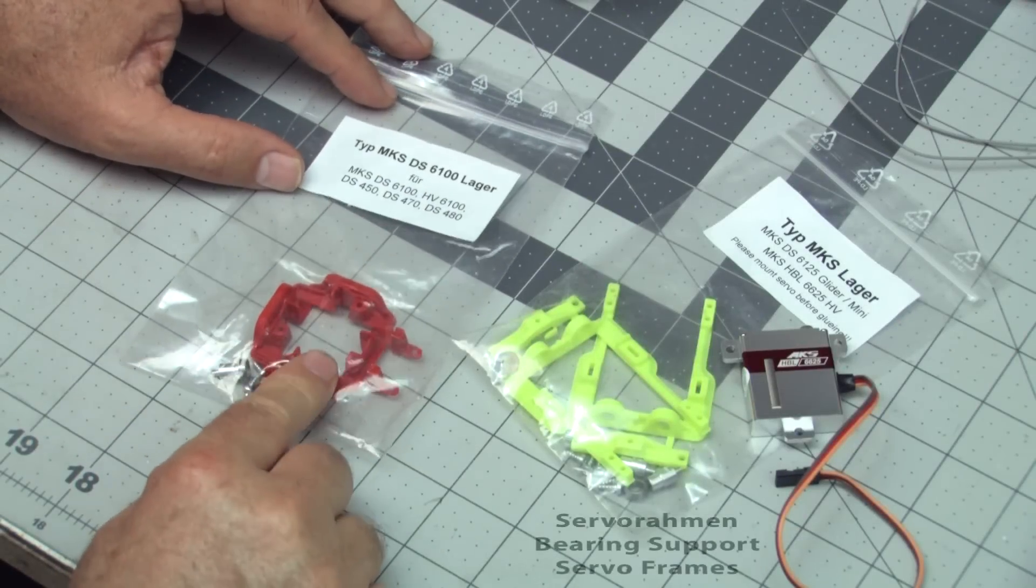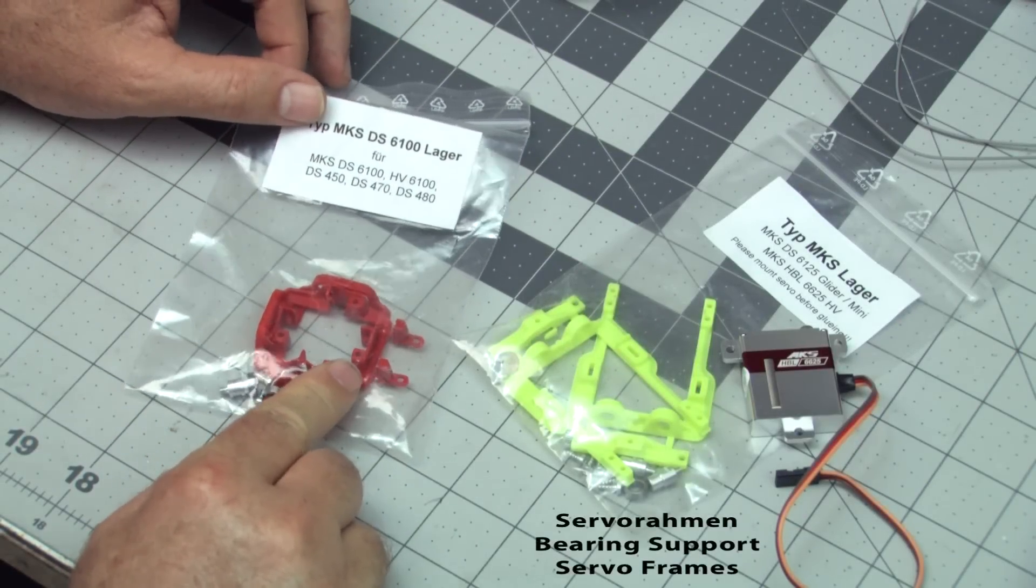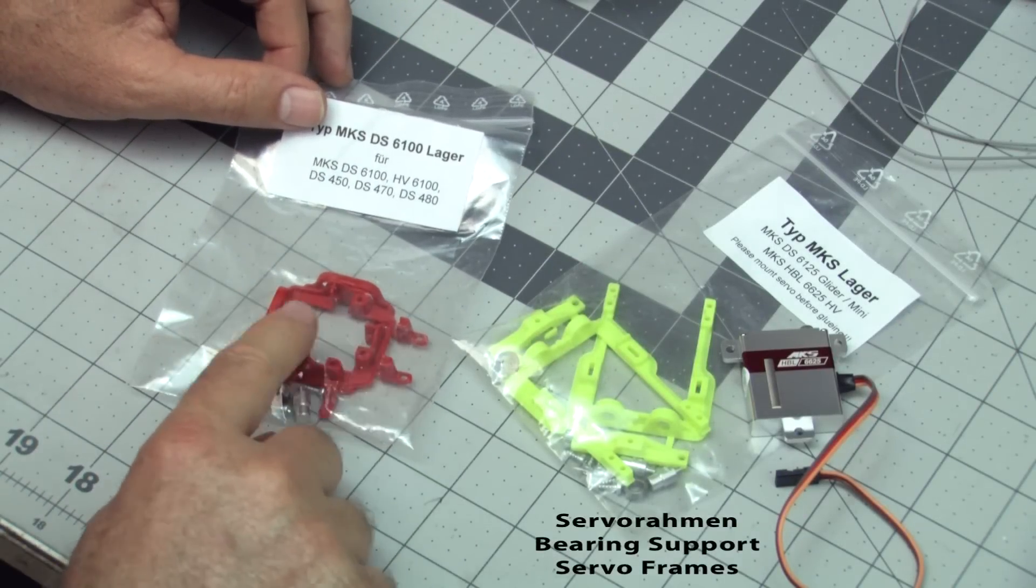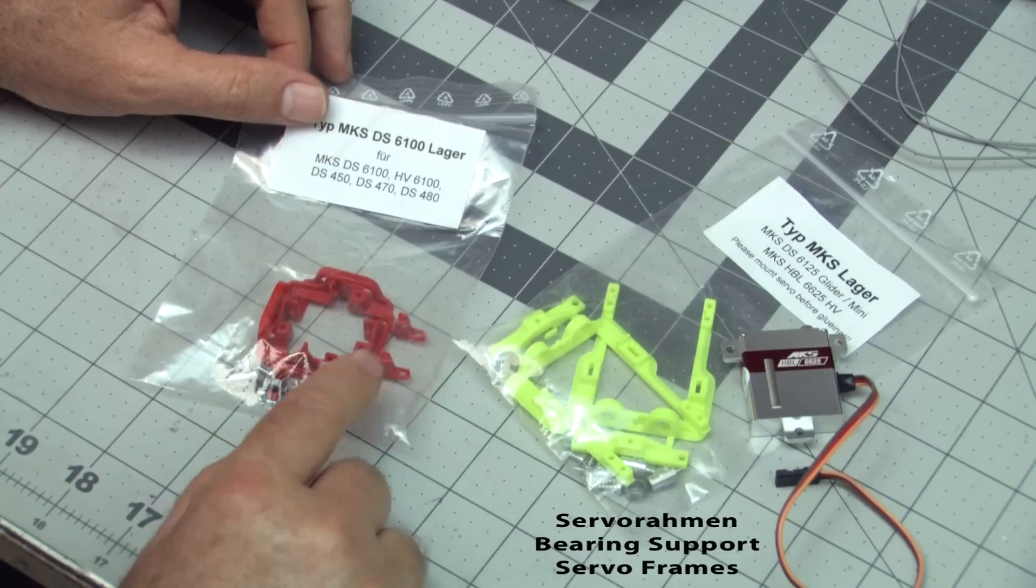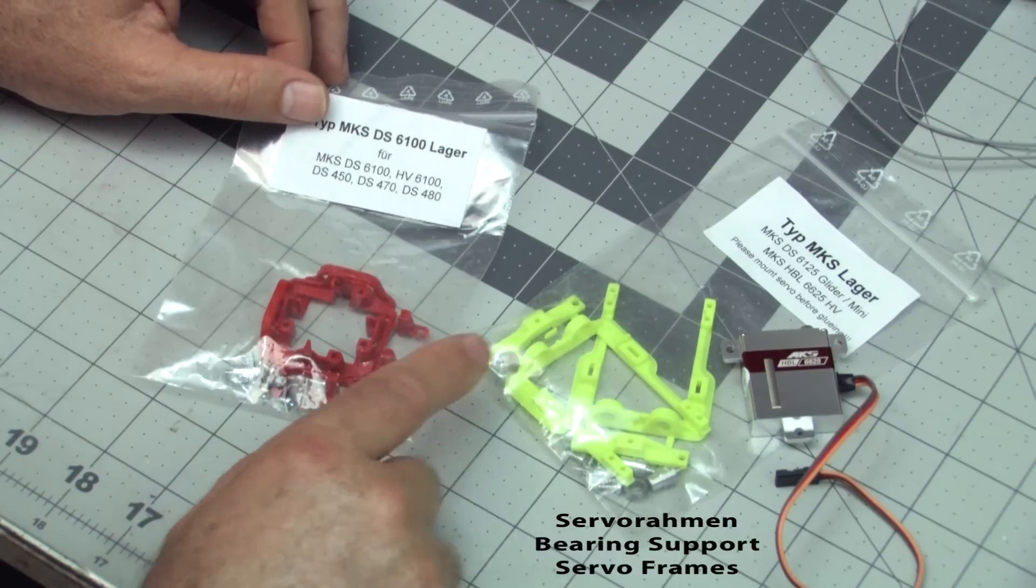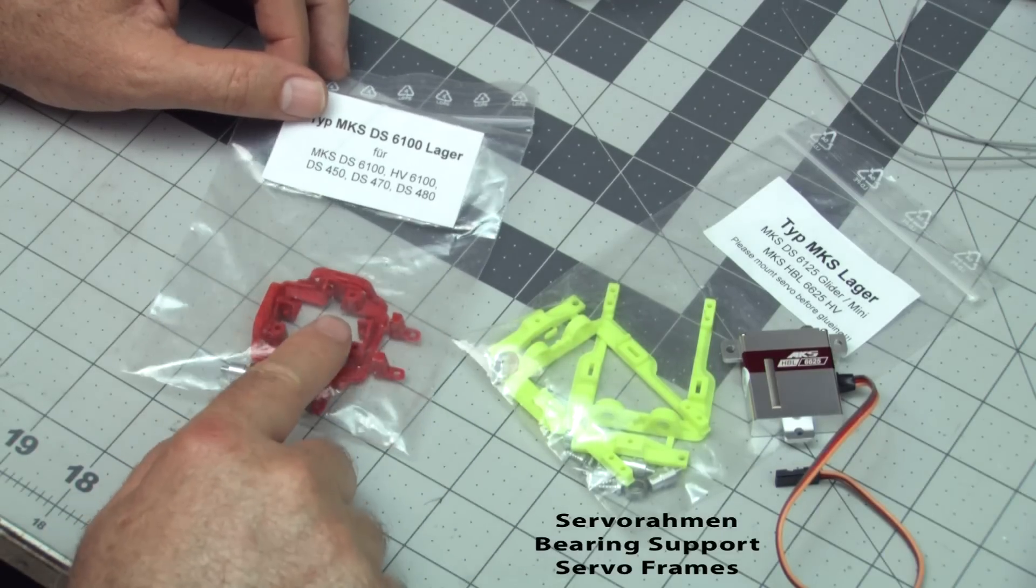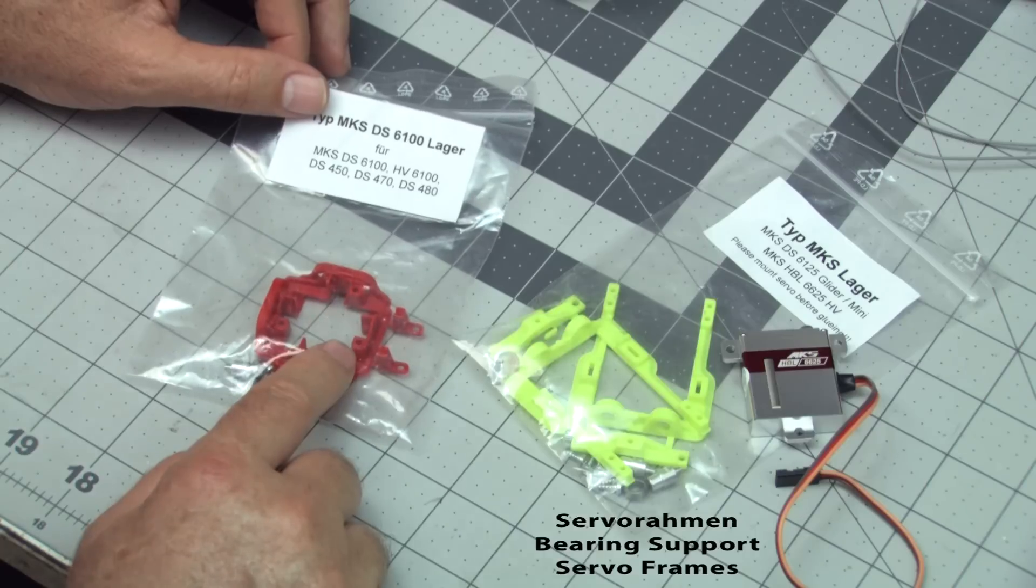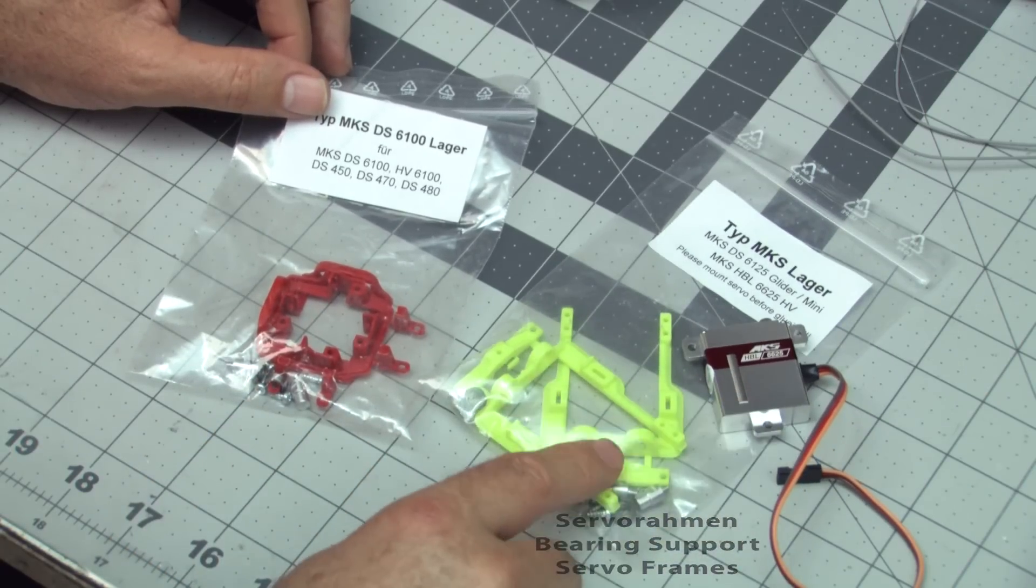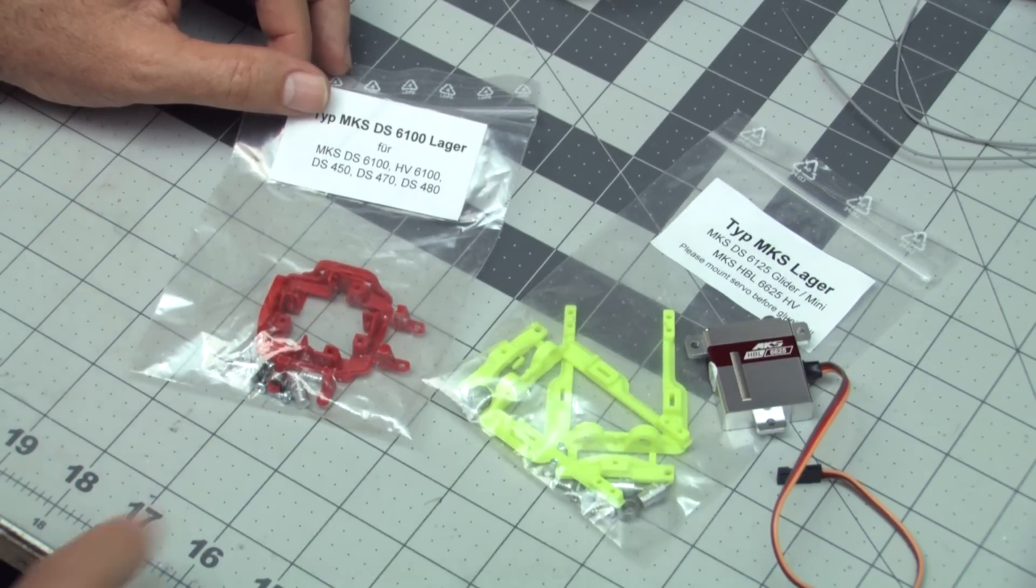Now to mount the servos in the wings, we're going to be using the new bearing style frames here, which add extra support to the bearing area and the output shaft of the servo. These are from servo ramen. We got these from Soaring USA. We're going to be using these for the 6100HVs in the ailerons and for the 6625, the new brushless flap servos.